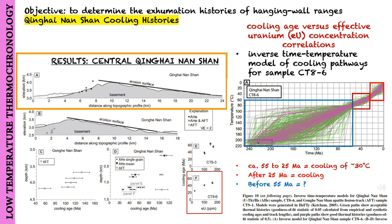Prior to 55 million years ago, a wide range of time-temperature cooling histories is permissible, including possible episodes of cooling and heating related to exhumation and reburial, so they draw no conclusions about the history during this time.